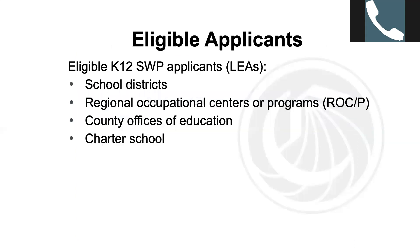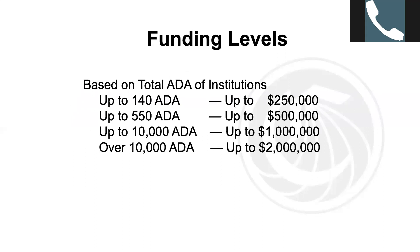Eligible applicants remain the same. Eligible K-12 Strong Workforce applicants include school districts, regional occupational centers or programs, county offices of education, and charter schools. With regard to funding levels, funding levels are based on total ADA of the institution — the total ADA is equal to the sum of all individual K-12 schools or institutions listed on the application, not the district ADA. For year two, funding was capped at $2 million to be able to award more LEAs.